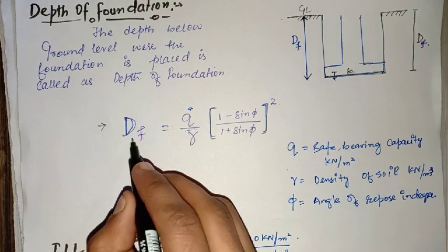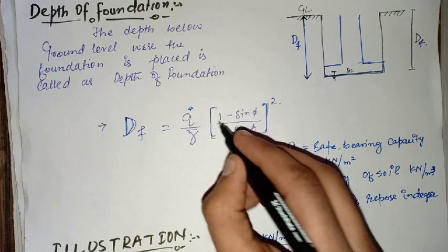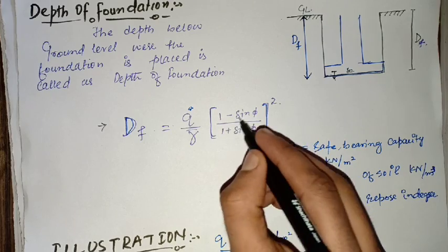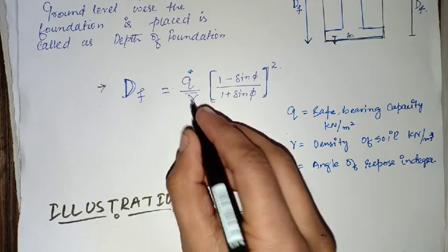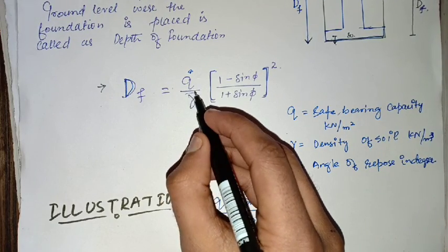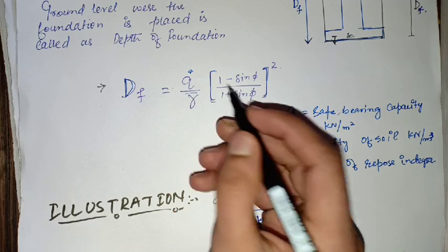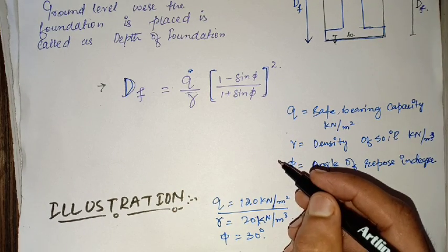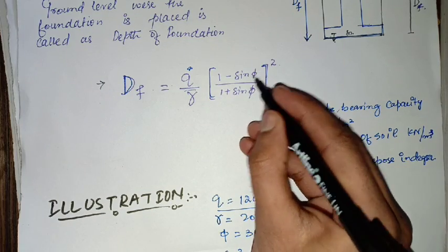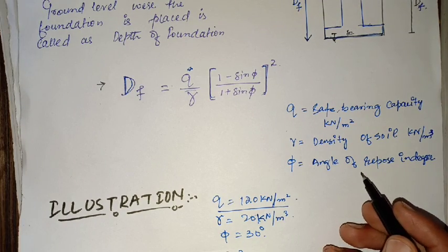The expression for depth of foundation is: Df = Q / γ × ((1 − sin φ) / (1 + sin φ))². Here, Q is the safe bearing capacity of the soil in kilonewton per meter square, γ is the density of the soil in kilonewton per meter cube, and φ is the angle of repose in degrees.